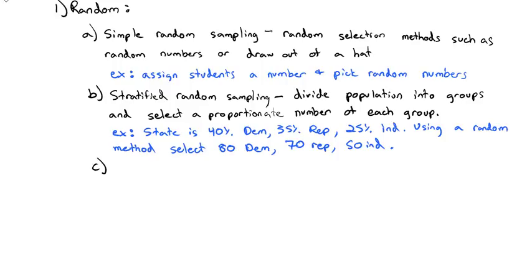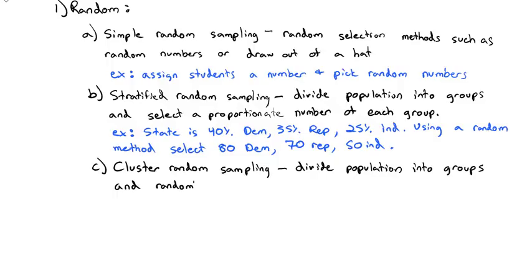Another type of random sampling also involves groups, but it's called cluster random sampling. Again, we're going to divide into groups, but this time instead of selecting a proportionate number of each group, we are going to randomly select entire groups. So everybody in some groups are included, and everybody in other groups are excluded.